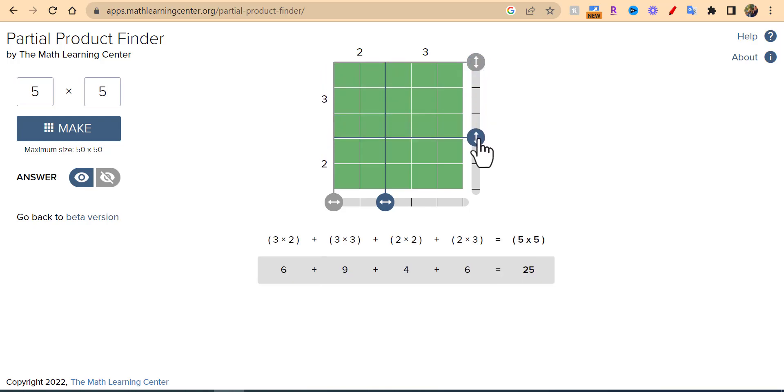You could also do something like this, so you can see how it's all set up: 3 groups of 2 and 3 groups of 3, 2 groups of 2 and 2 groups of 3. You can do it that way.